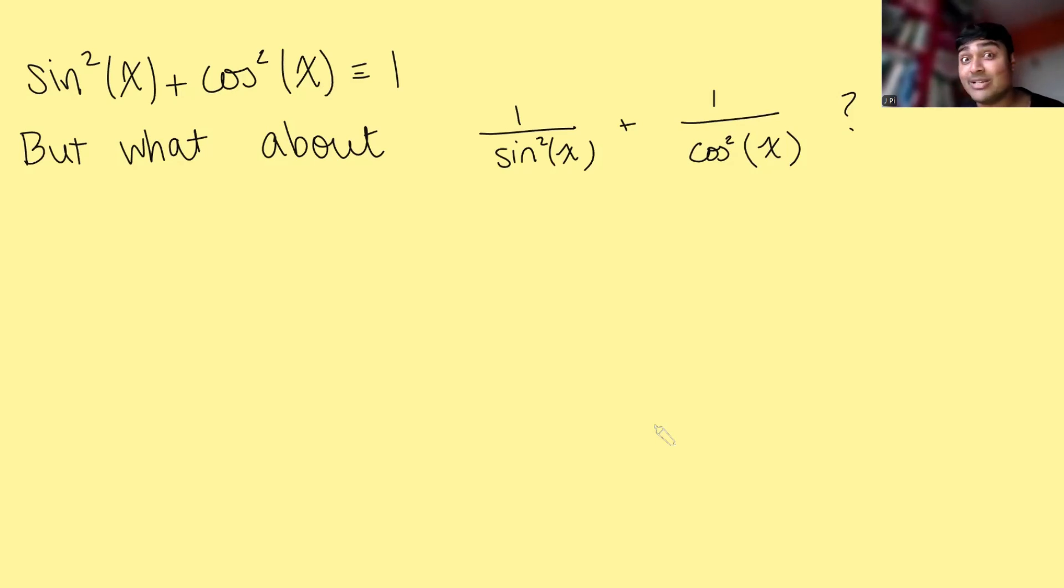We all know that sine squared x plus cos squared x is always 1. But what about 1 over sine squared x plus 1 over cos squared x? Could that ever be 1?